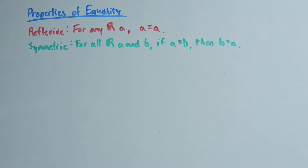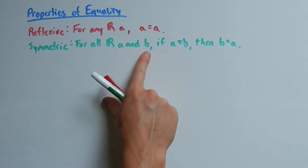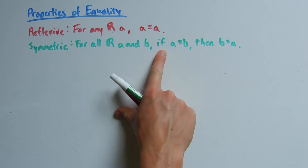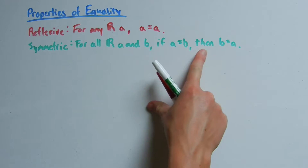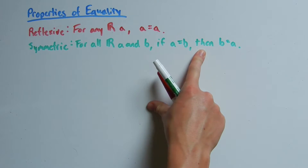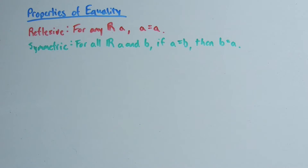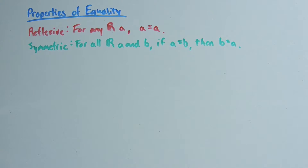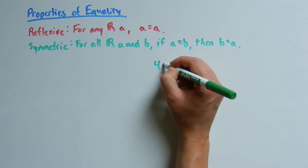Next is the symmetric property. The symmetric property says for all real numbers a and b, if a is equal to b then b is equal to a. For example, if a was equal to 4 and b was equal to x plus 5, then x plus 5 is also equal to 4.